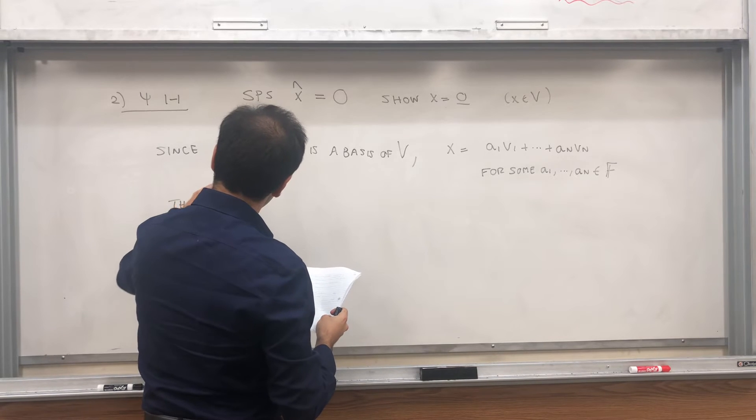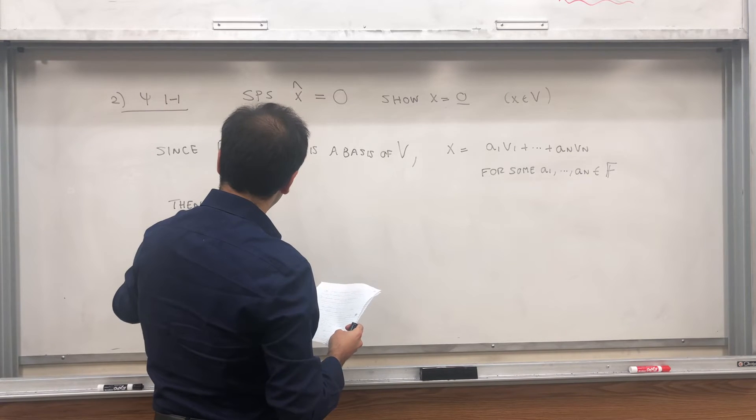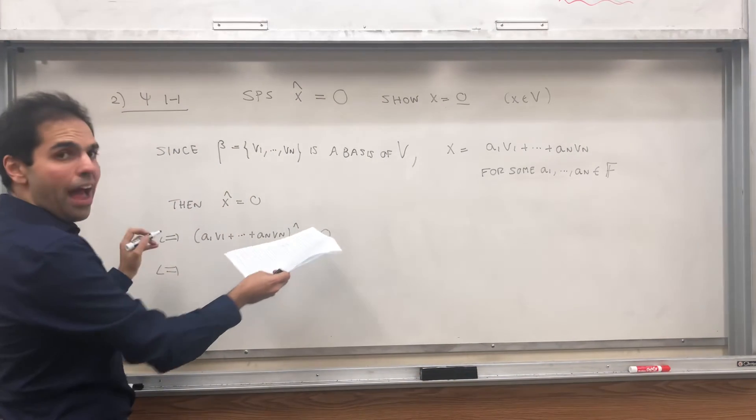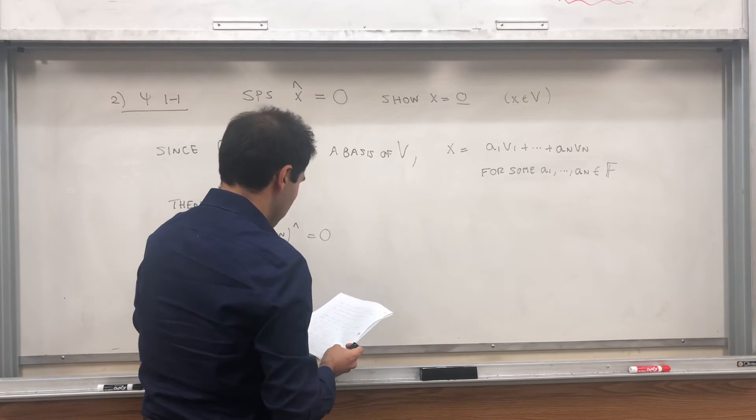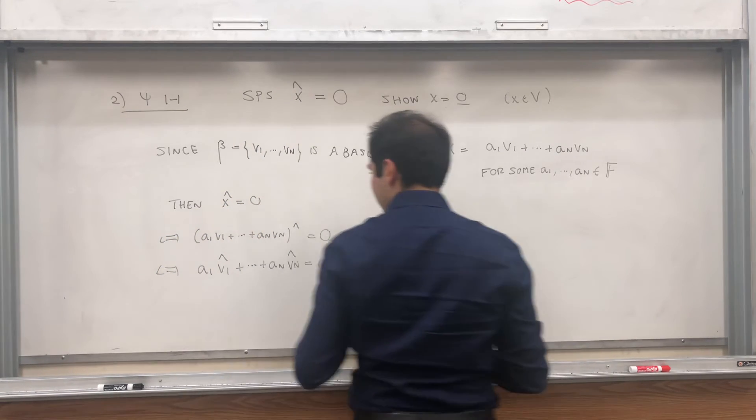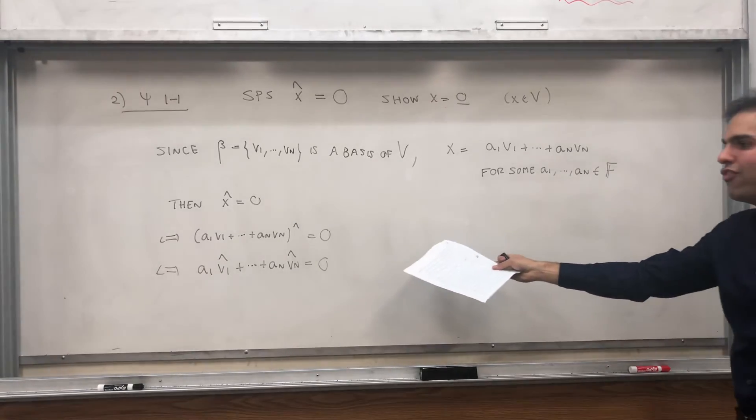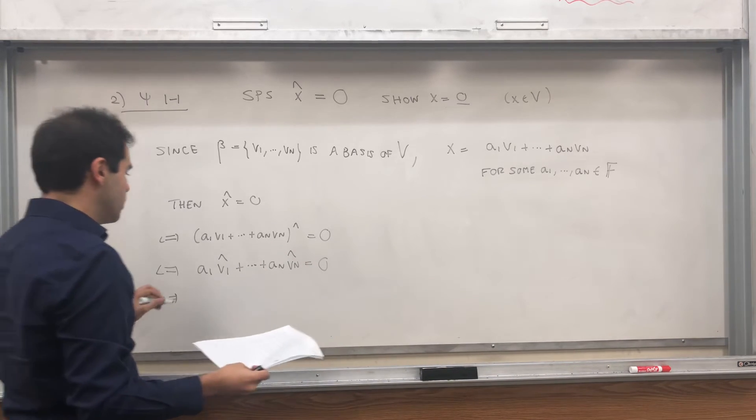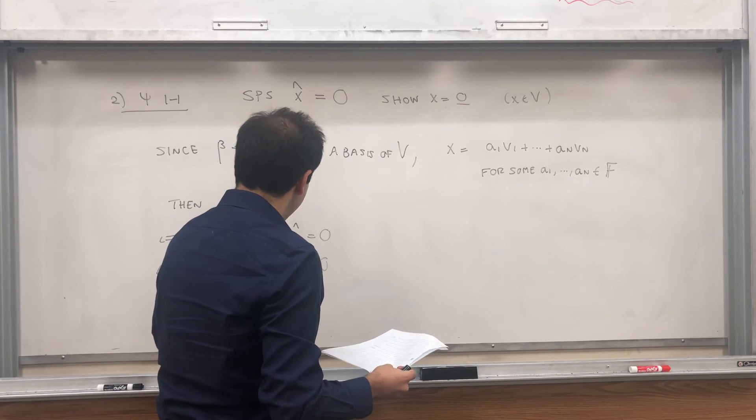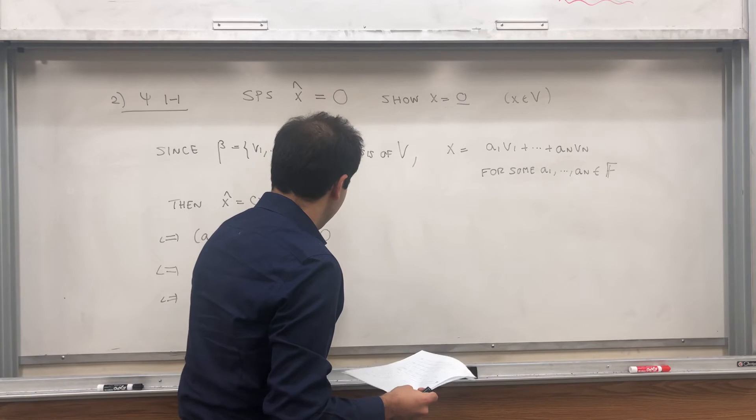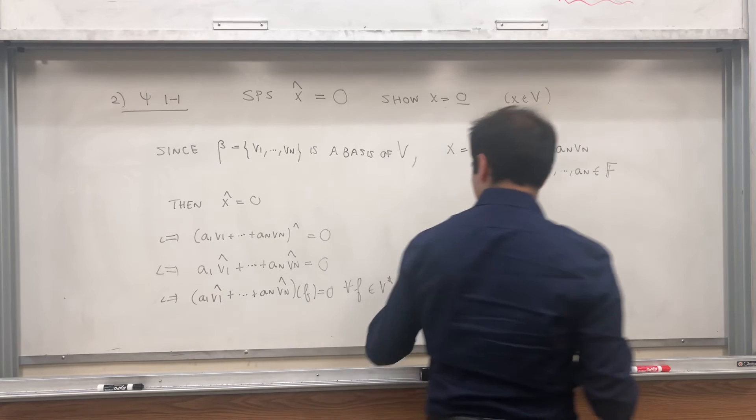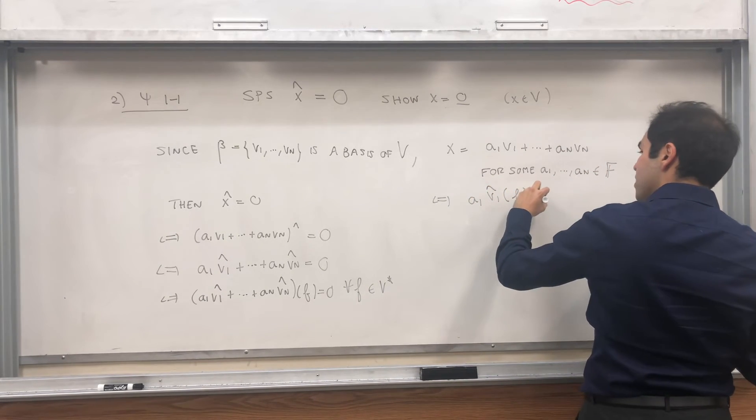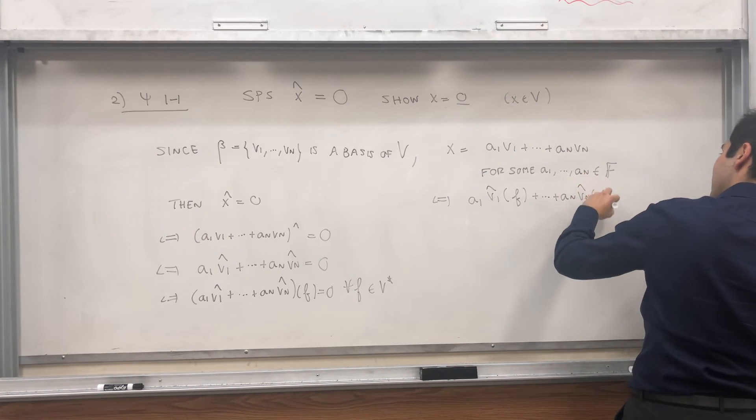So then, x hat equals zero. That's the same thing as a1 v1 plus dot dot dot plus an vn hat equals zero. But remember, hat is linear. So this is a1 v1 hat plus dot dot dot plus an vn hat equals zero. And again, this is an equality of functions. So for functionals, so in particular, it means for every f, if you apply this to f, you always get zero. a1 v1 hat plus dot dot dot plus an vn hat at f equals zero for all f in v star. But again, by linearity, you can decompose that. So a1 v1 hat of f plus dot dot dot plus an vn hat of f equals zero.